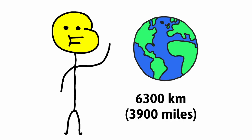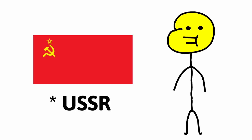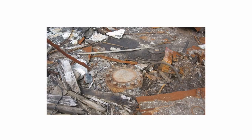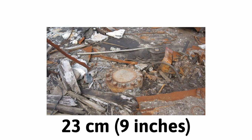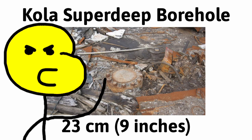The Earth's radius is about 6,300 kilometers. So if you started digging, how long would it take to get to the middle? Well, that's exactly what the Russians tried to do in the 1970s. It's 23 centimeters in diameter and it's called the Kola Superdeep Borehole, and it breaks the first rule: never dig straight down.